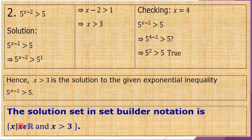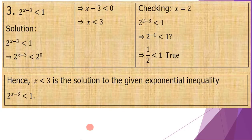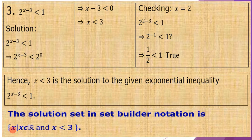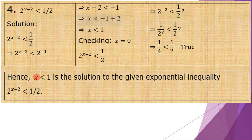Written in set builder notation, number two gives us the set of all X's such that X is an element of the real numbers and X is greater than 3. For number three, the solution set is X less than 3, written in its equivalent set builder notation form.